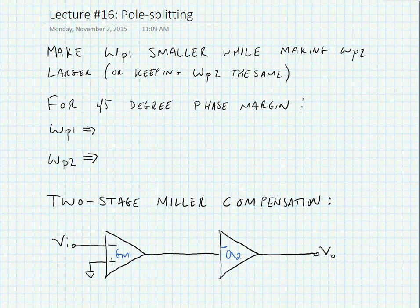Our goal is to make the omega p1, the dominant pole, smaller in frequency while making the omega p2, which is the second pole, larger in frequency or at least keeping omega p2 the same.